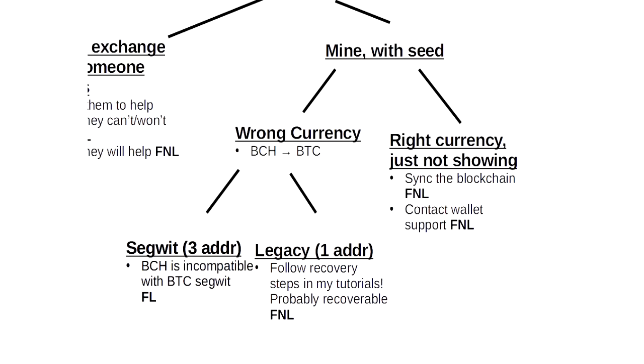So in one case, you have to ask, did I accidentally send to the wrong currency? Again, this is a really common scenario that I get asked about. For most people, it's sending Bitcoin Cash to Bitcoin BTC addresses. In that case, another question you have to ask is, is this a SegWit or segregated witness address?